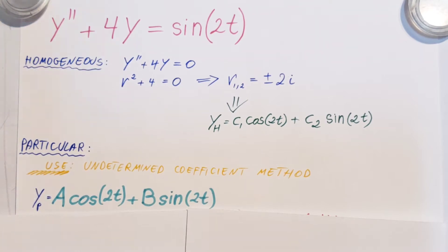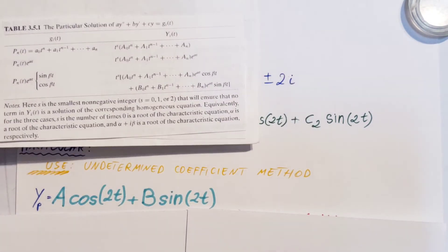Now it's time to find our particular solution and we're going to use the undetermined coefficient method. And this will be my guess for my particular solution. When we use this method we have to guess what will be our solution and based on that we're gonna continue the problem. So how do we guess? Well here it is.